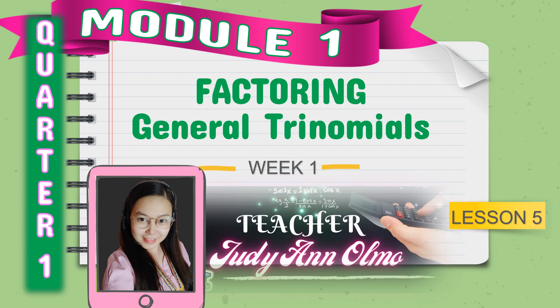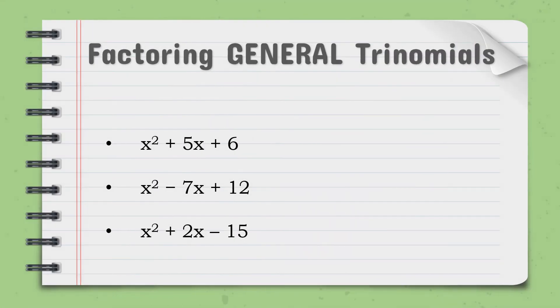Module 1 lesson 5, Factoring General Trinomials. So factoring general trinomials, it is written as AX squared plus BX plus C. Trinomials having three terms, we have 1, 2, and 3, composed of three terms. And here is an example of general trinomials.